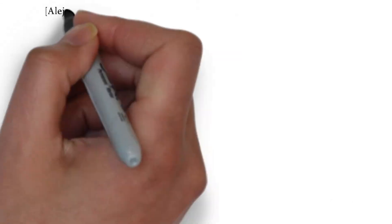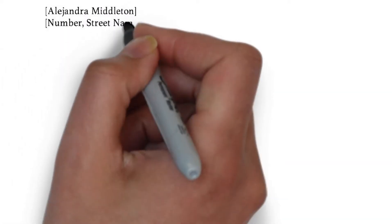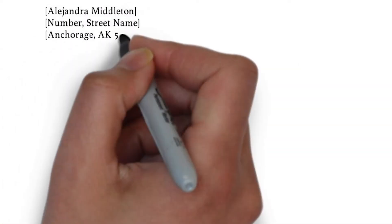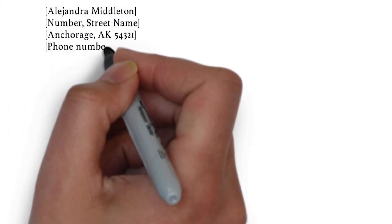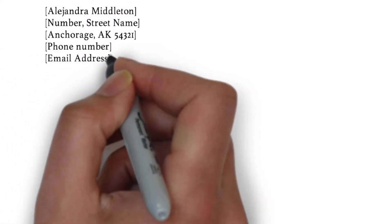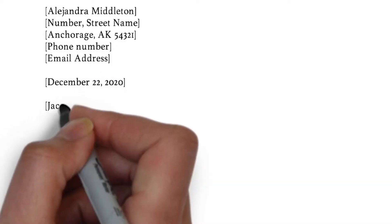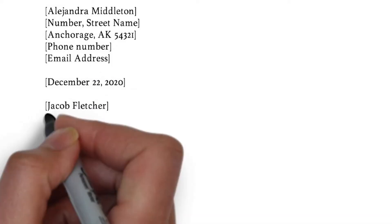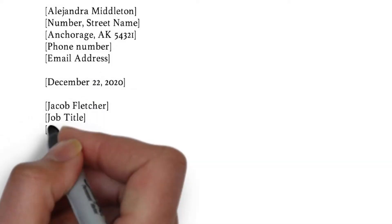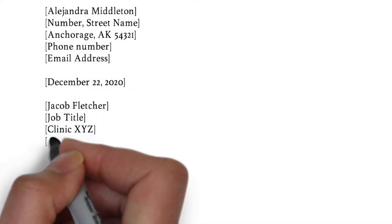First, you need to list your contact information on the left side. In between white lines underneath, we put the date and then the reader's name and job title, followed by the clinic's information.